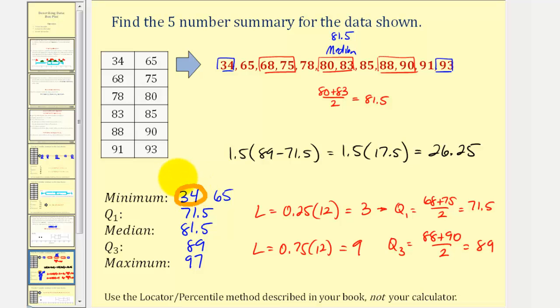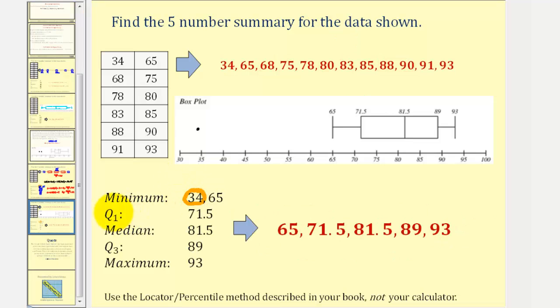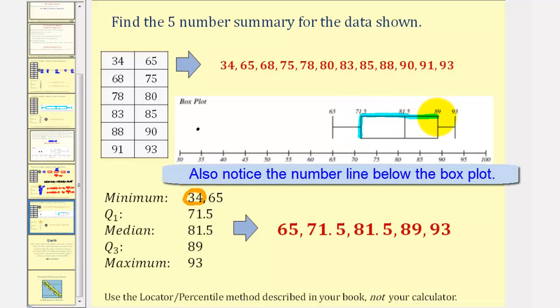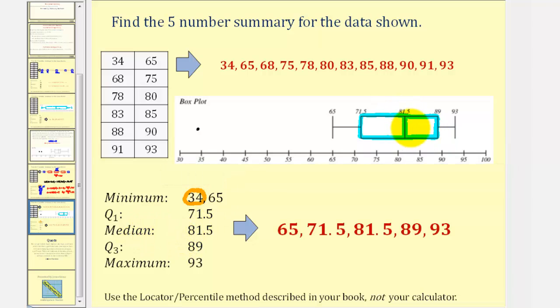And now we can go ahead and make our box plot. We create the box using Q1 and Q3, 71.5 to 89. Draw a line at the median, which is 81.5 here. To create the lower whisker, we only extend the whisker down to 65, as we see here. And then put this point here at 34, because this is an outlier. And the upper whisker will go out to 93, which we see here.